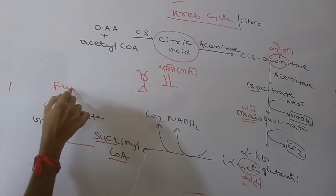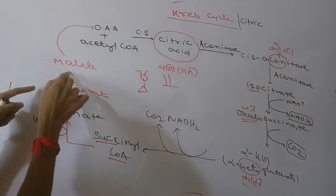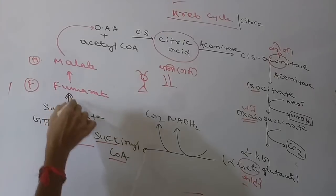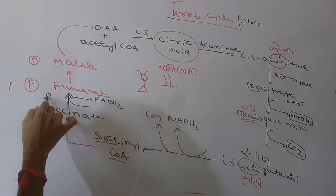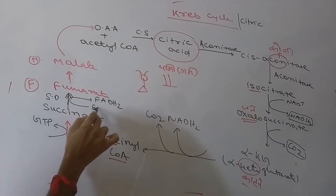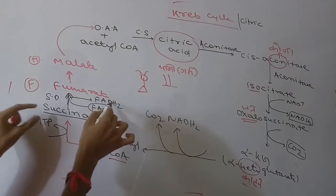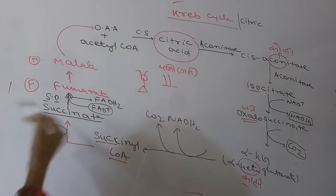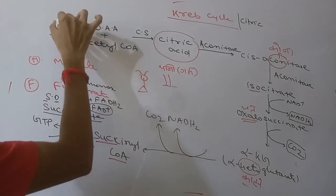Now fumarate is formed. FM means fumarate and M means malate — together FM and M. Succinate, with one FAD+, via the enzyme succinate dehydrogenase — succinate gives hydrogen; that hydrogen is accepted by FAD+ to form FADH2. Succinate undergoes dehydrogenation to give fumarate. Last step: malate oxidation means NAD+ is used for formation of oxaloacetate.